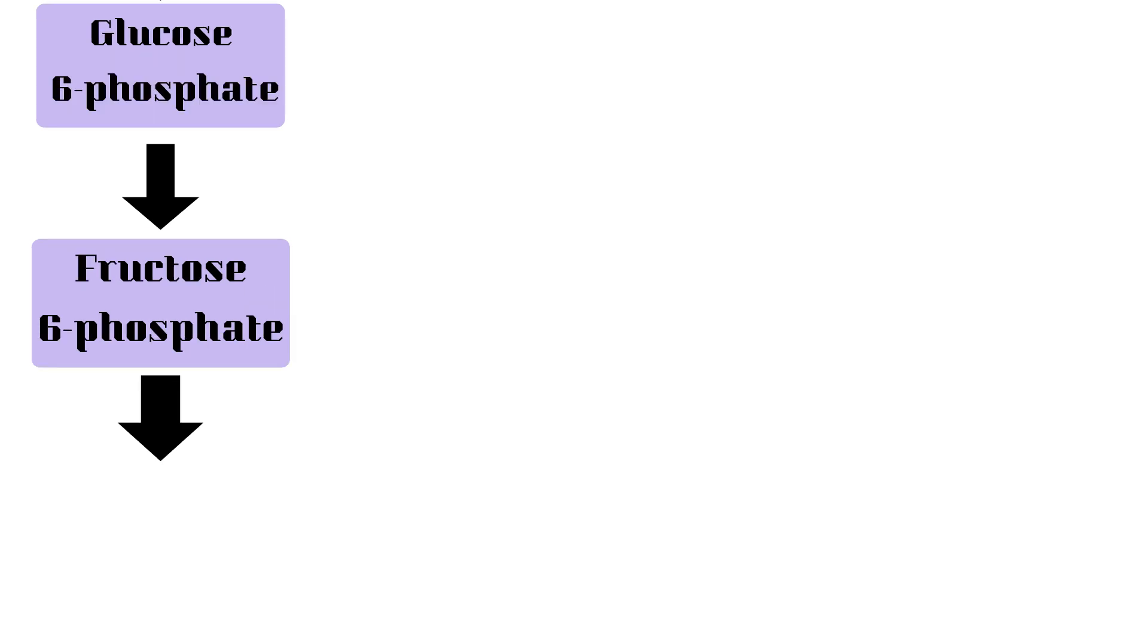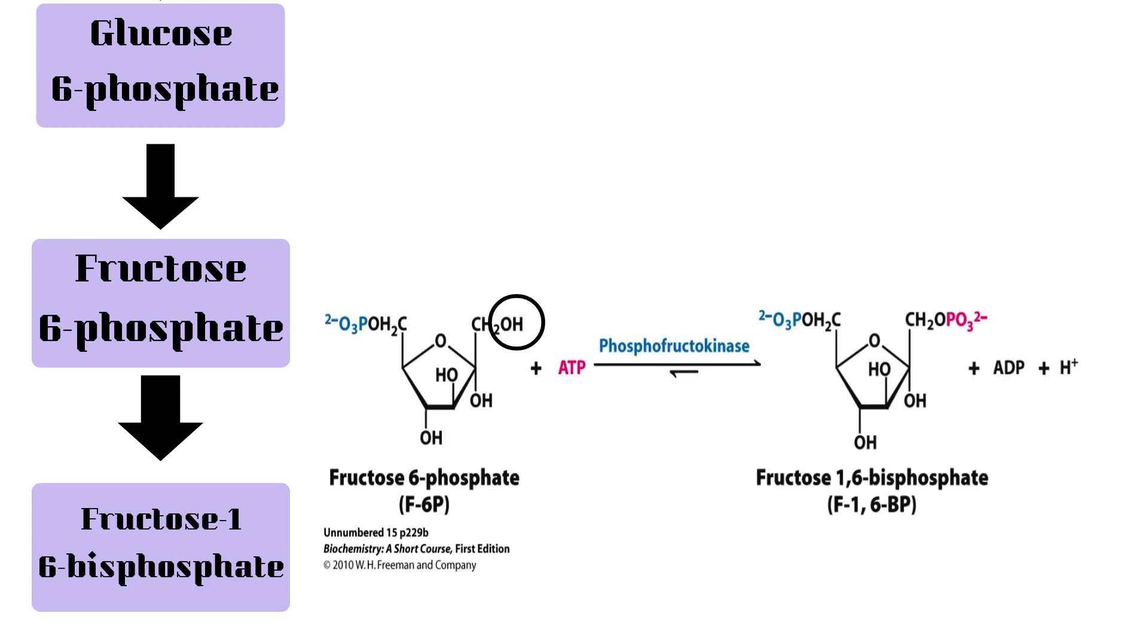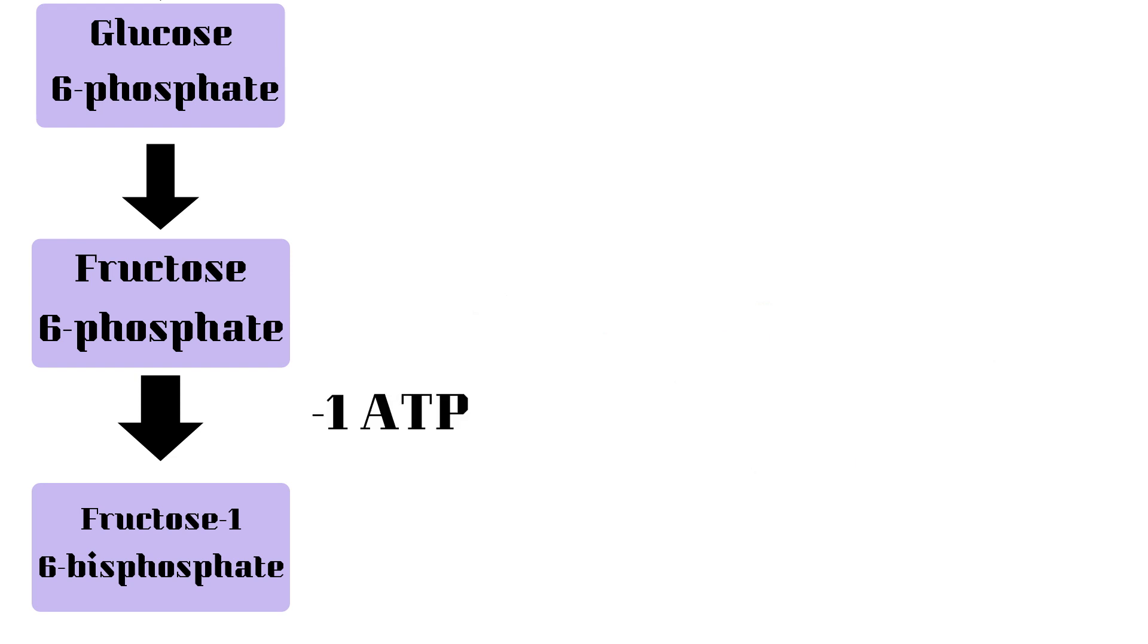Then, the fructose 6-phosphate is going to have a phosphate group added to it, making fructose 1,6-bisphosphate. You can see here, the hydrogen was replaced with a phosphate group. This time, the reaction is going to occur with the help of the enzyme phosphofructokinase. And this reaction is going to use up another ATP molecule because it is adding a phosphate group.